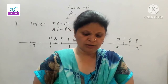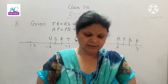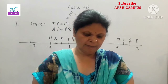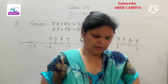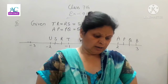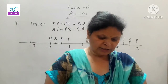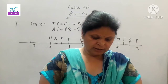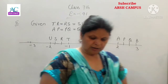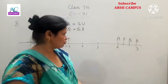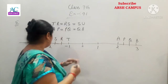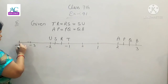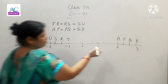P, Q, R, S — yeh kis point par hai, woh aap ne batana hai. Ab aap ko number line di hoi hai. Kya minus 4 to 4? Hame number line bana leni hai minus 4 se 4 tak.